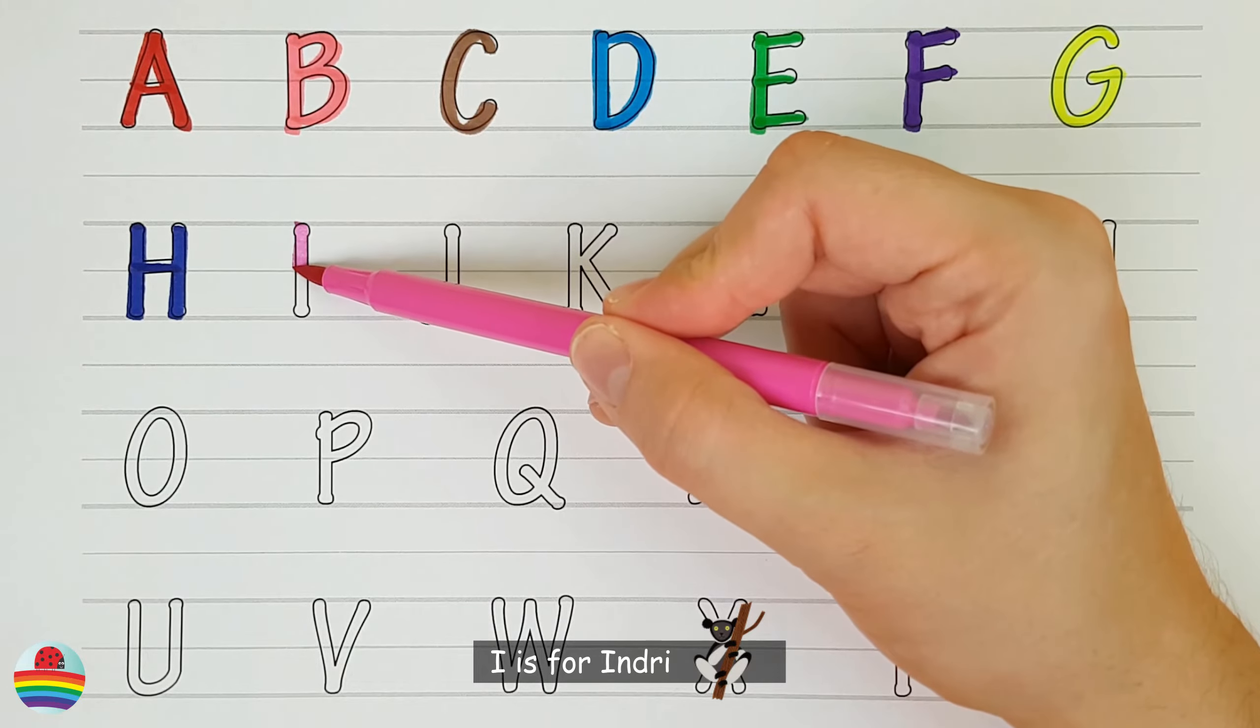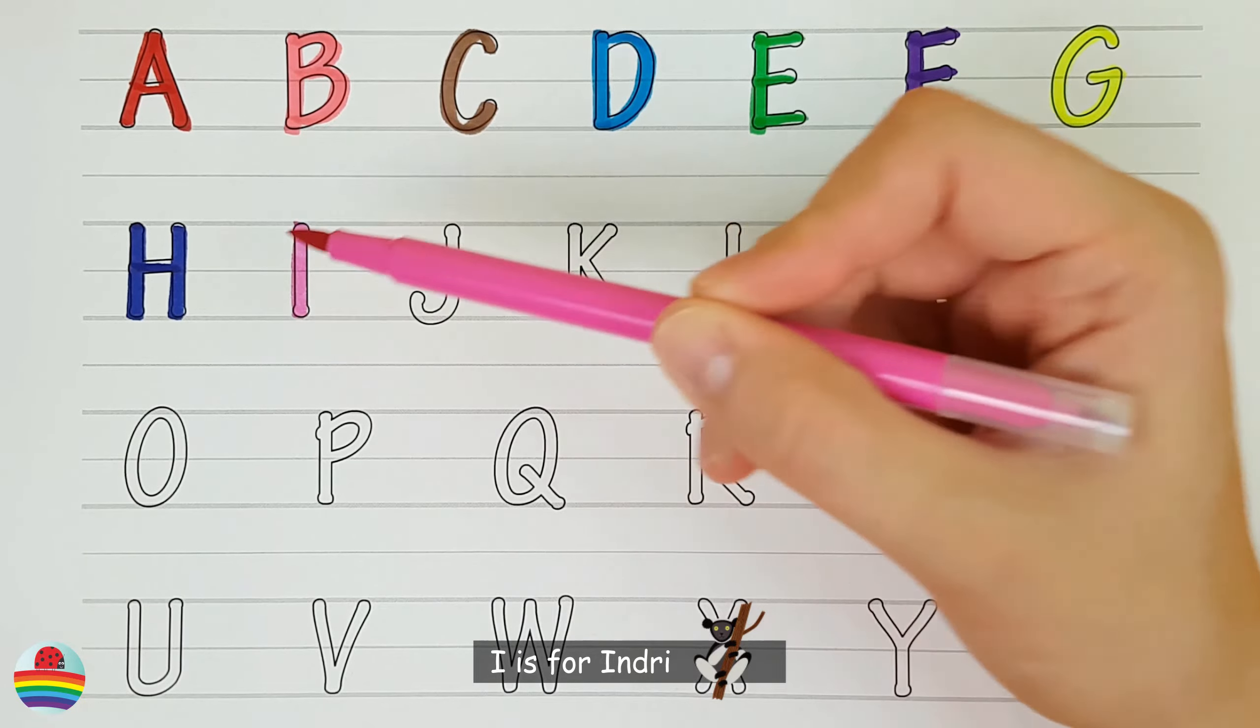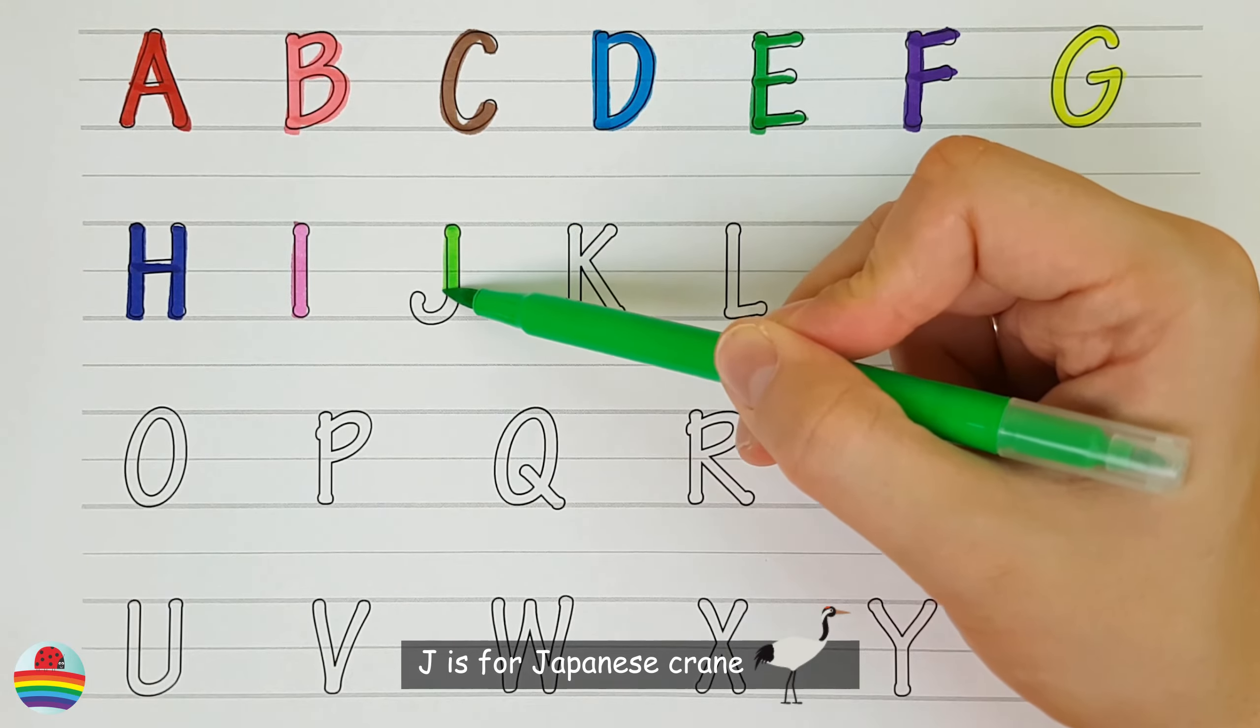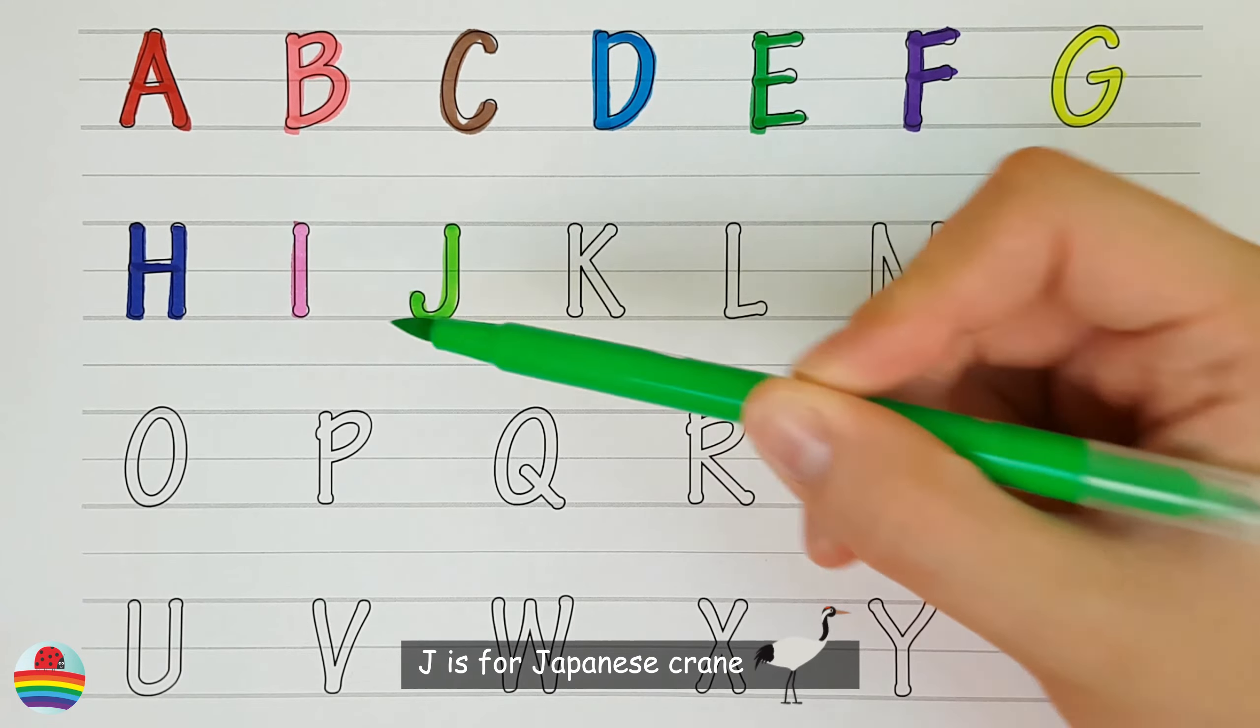I. I is for indri. I. J. J is for Japanese crane. J.